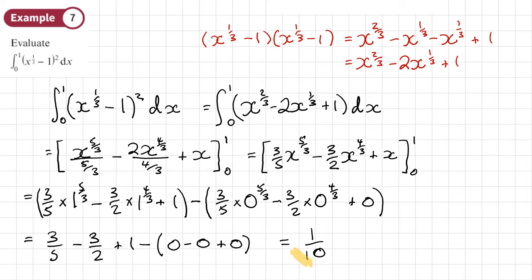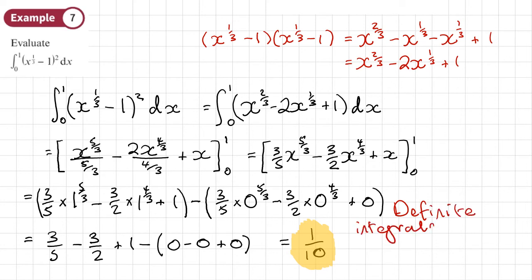Notice something that's missing from this question that was present in all our previous indefinite integral questions — the constant plus C. In this whole process there is no plus C. So when we do definite integrals, there is no constant of integration. There never will be when you have limits, and you'll always get a numerical answer at the end.